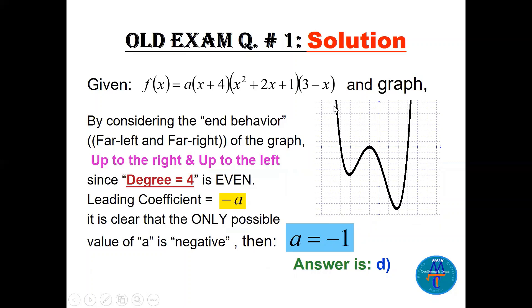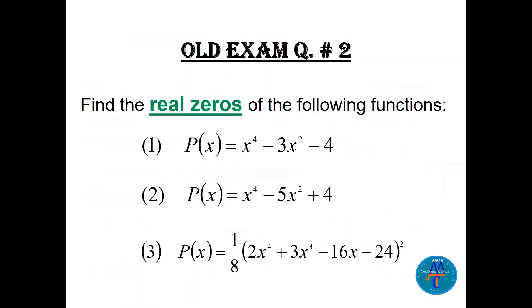The reasonable answer is minus 1, because if you put minus 1 in for a, it becomes positive — since the graph is up to the right and up to the left, the leading coefficient should be positive. So the answer is D: minus 1.